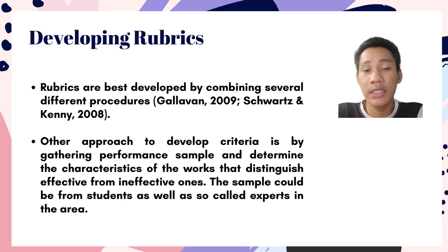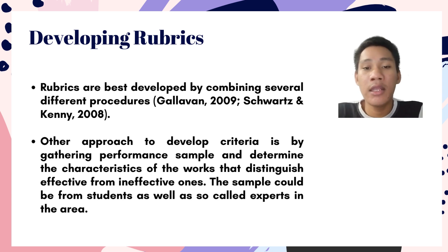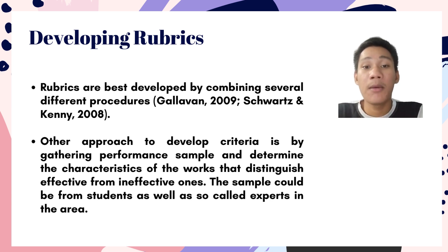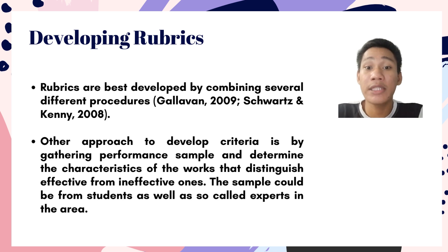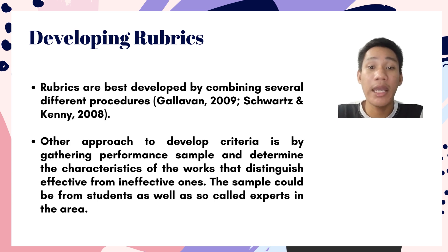However, this approach may take a while to develop a rubric since you first have to gather samples from expert performers, then gather the data, and present it for group approval — it will be rejected if it does not fit. Personally, the best way to create a rubric is to follow the previous step-by-step discussion, starting with the checklist type of rating scale, because that approach already guides you through how to develop a rubric systematically.